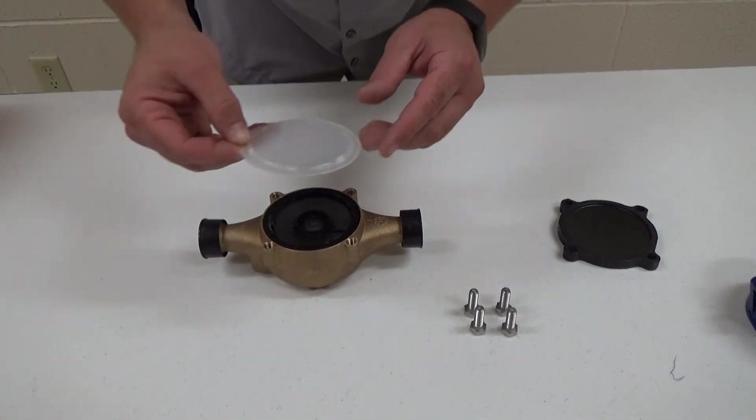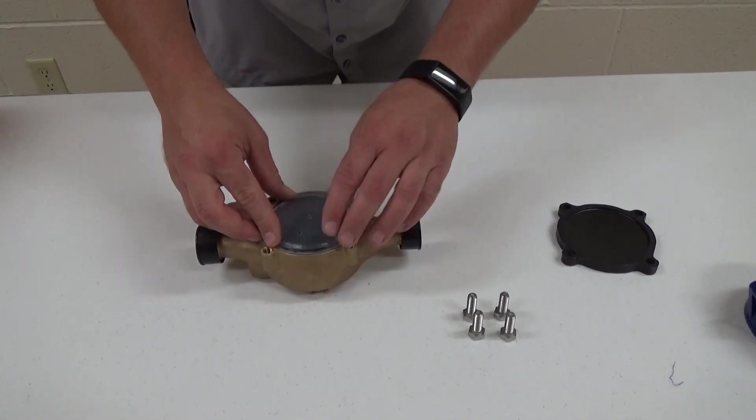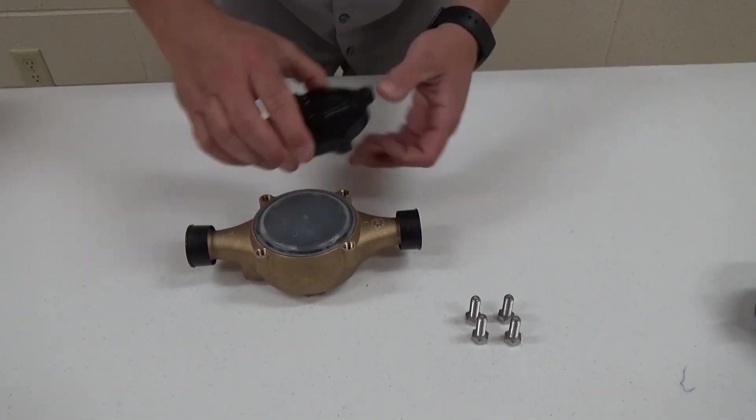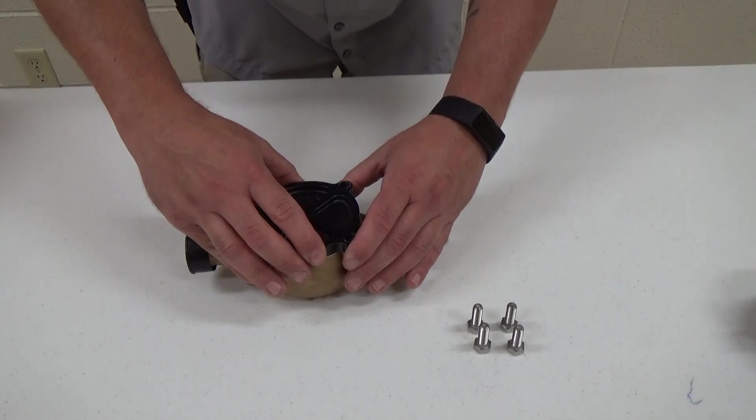Once that is complete, he will put the plastic liner into the meter. Next, he will put the bottom plate.